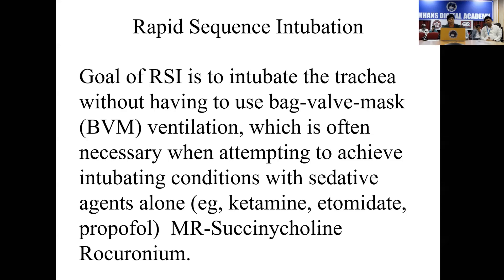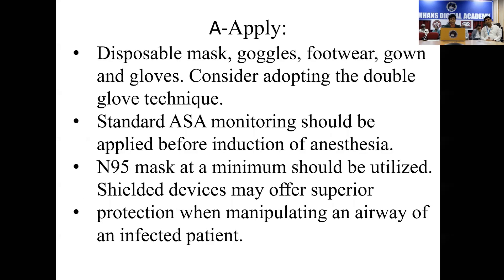The goal is not to do bag mask ventilation, as this will initiate aerosol and droplet infection. So we have to straight away do what is called a rapid sequence induction. Keeping it simple — ketamine is available across settings, and etomidate is another drug that can actually maintain the hemodynamics of these patients. We use a muscle relaxant — succinylcholine or rocuronium — where the onset of paralysis occurs within the next one minute. This has to be done by a specialist who has privileges of doing the intubation.